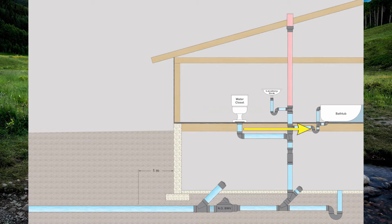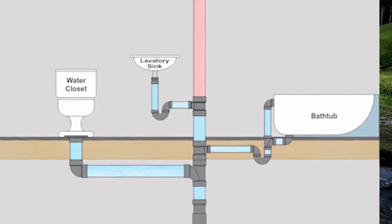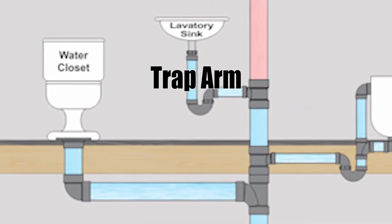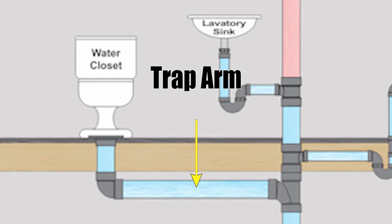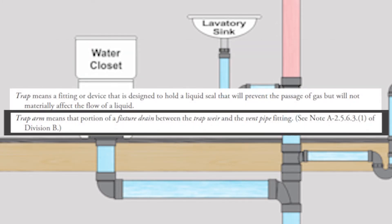You'll notice a U-bend in the pipe below the lavatory sink, the bathtub, and the floor drain in the basement — that is called a P-trap. That's an area where water sits in the pipe and basically plugs it off so sewer gas can't make it back into the house. If we look at the lavatory sink and bathtub, there's a horizontal pipe connecting the soil or waste stack to the trap — that is called a trap arm. You'll also notice a pipe extending from the bottom of the water closet — a fancy name for a toilet — heading over to the soil or waste stack. That is also a trap arm, but you don't see a P-trap there because the water closet has its own built-in P-trap, which is why you can always see water inside the bowl.